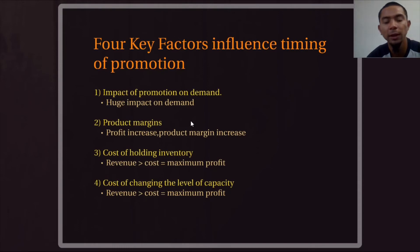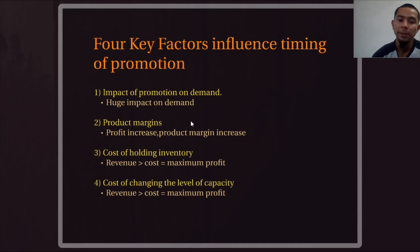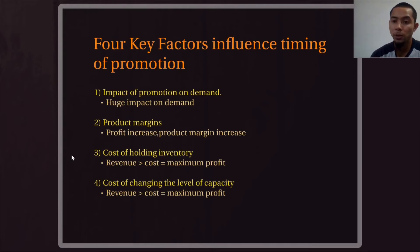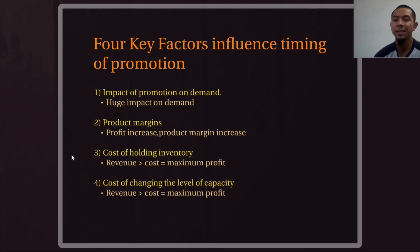Number three is cost of holding inventory — also known as storage cost. When we do promotion, demand increases, supply increases, and production increases. Products must be stored before being transported to other supply chain members, so producers must calculate whether storage costs are too high and would affect profit. If they do affect profit negatively, that is not the correct timing for promotion. Number four is cost of changing the level of capacity. As promotion increases demand and supply, we also need to increase production capacity, which increases cost. If this increase affects profit negatively, that is not the ideal timing for promotion.